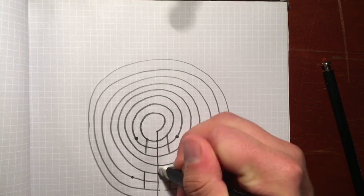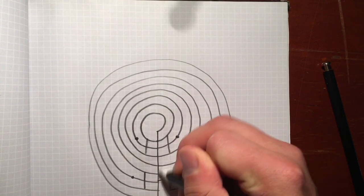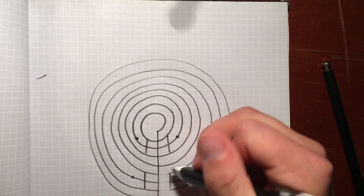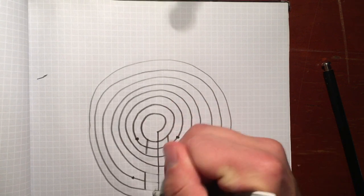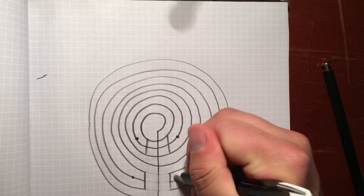And so then you erase your entrance like this. You're going to come around and you're going to erase this. You're going to erase these two line ends.